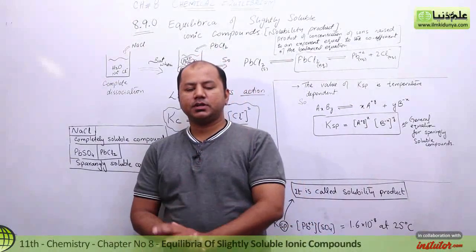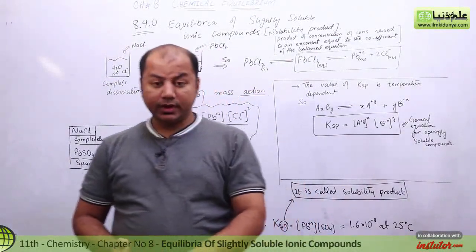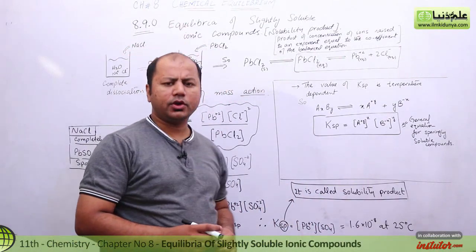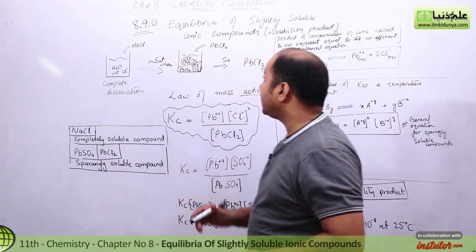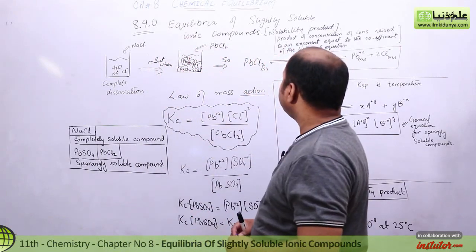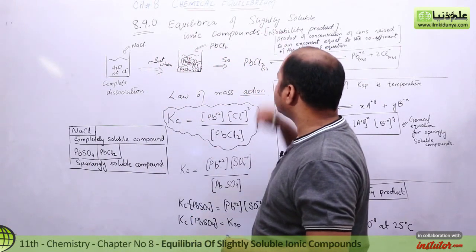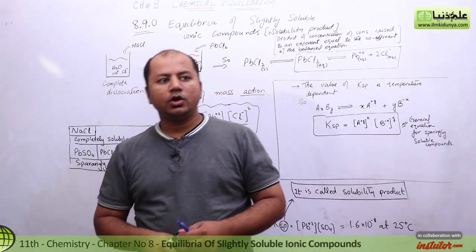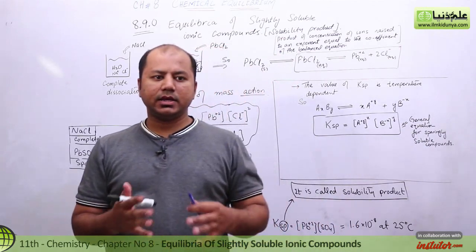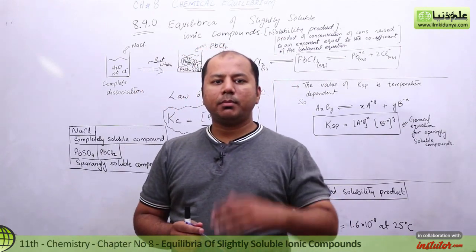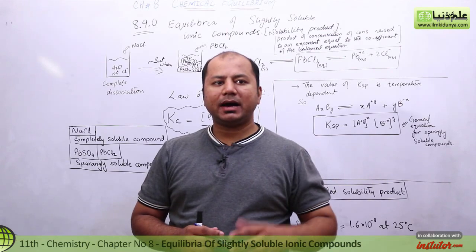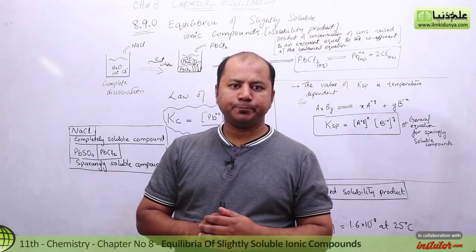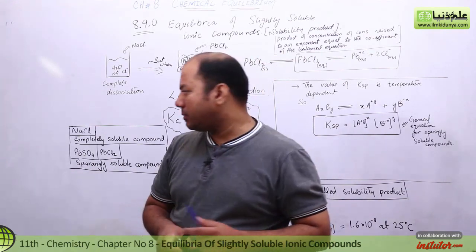In today's lecture we are going to talk again about chemical equilibrium, chapter number 8 of your book. Today's lecture is about chemical equilibrium for slightly soluble ionic compounds — compounds which contain ionic bonds. You will see that some compounds when added to water get soluble, and some do not behave as you commonly know.